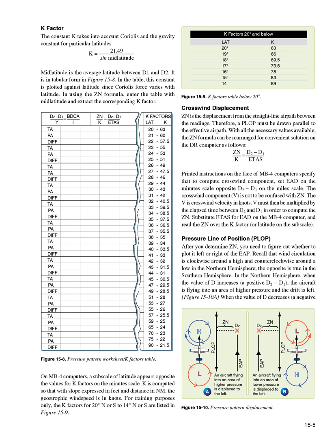Crosswind displacement: Zn is the displacement from the straight-line airpath between the readings. Therefore, a PLOP must be drawn parallel to the effective airpath. With all the necessary values available, the Zn formula can be rearranged for convenient solution on the computer. Printed instructions on the face of MB4 computers specify that to compute crosswind component, set EAD on the minute scale opposite D2-D1 on the mile scale. The crosswind component V is not to be confused with Zn. V must be multiplied by the elapsed time between D2 and D1 to compute the Zn. Substitute EAD for EAD on the MB4 computer and read the Zn over the K-factor or latitude on the subscale.